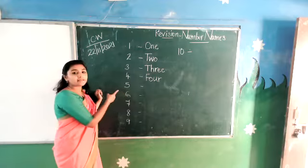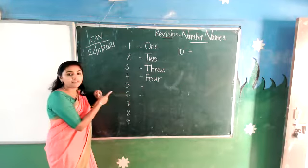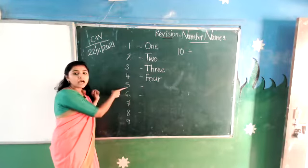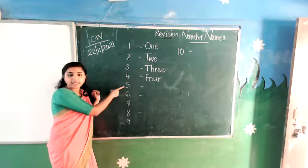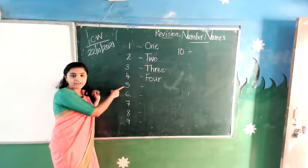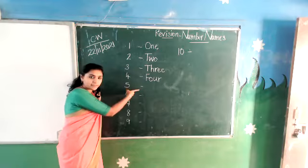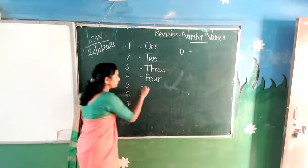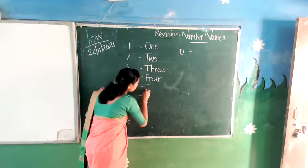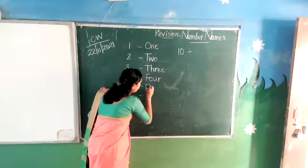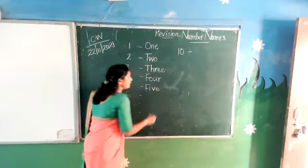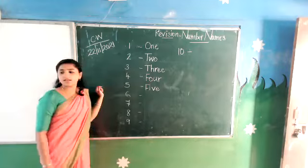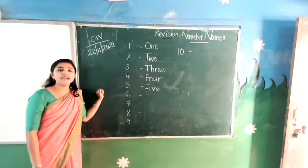What is the spelling of number 5? You can see here number 5 — we will write the number name. F-I-V-E — 5.